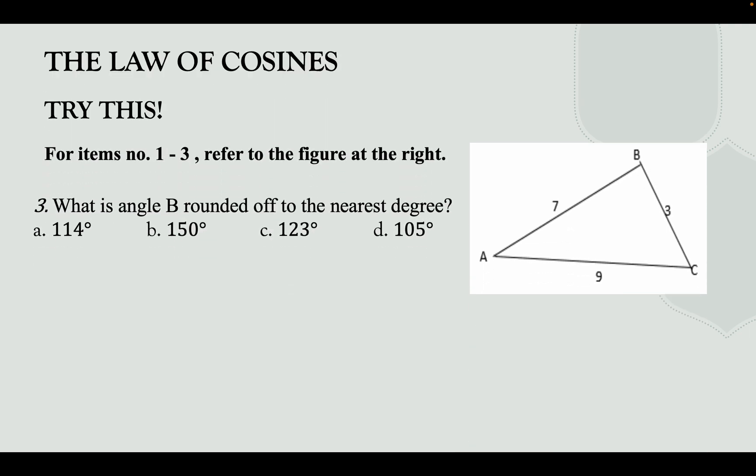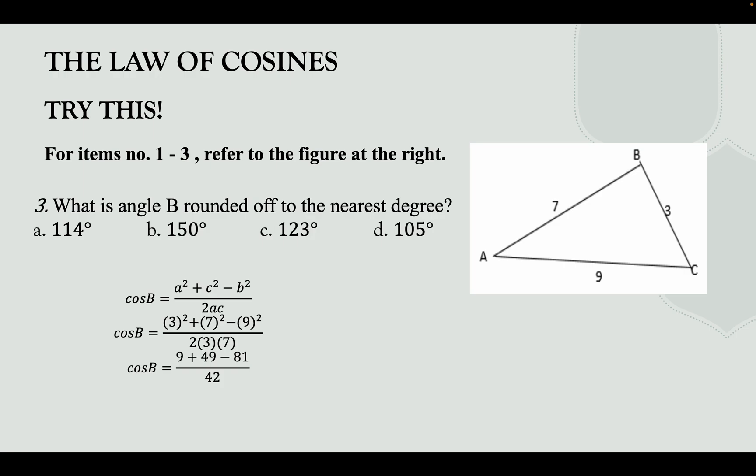Last question: what is angle B to the nearest degree? Using cos B = (a² + c² − b²) / (2ac), substitute the given, simplify, and apply cos inverse: cos inverse of (9 + 49 − 81) / 42, giving angle B ≈ 123.20°, or 123° to the nearest degree.